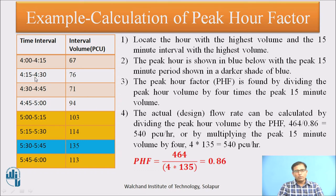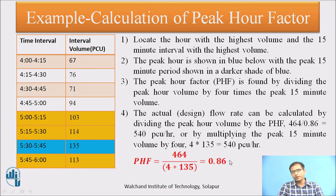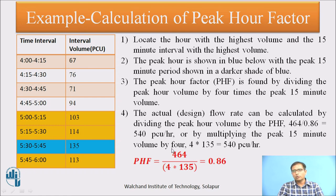In a numerical example: a 2-hour survey from 4 to 6 PM shows the peak hour is from 5 to 6 PM. The maximum 15-minute peak flow, observed from 5:30 to 5:45, is 135 vehicles. The total 1-hour peak hour volume sums to 464 vehicles. PHF equals 464 divided by (4 × 135), giving 0.86. For 5-minute intervals, divide 60 by 5 to get 12, then use 12 times the 5-minute volume as the denominator.